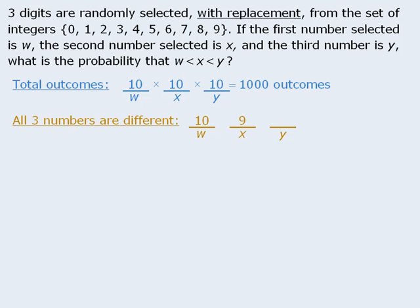And finally, once the first two numbers have been selected, there are eight ways to select the third number such that it is different from the first and second numbers. When we apply the fundamental counting principle, we can see that there are 720 outcomes where the three selected numbers are different.